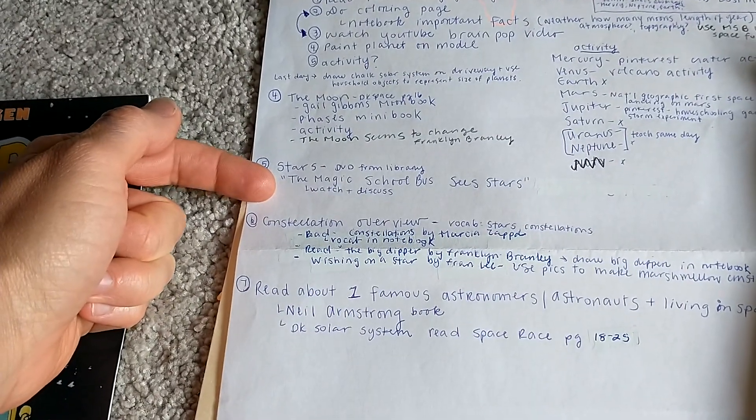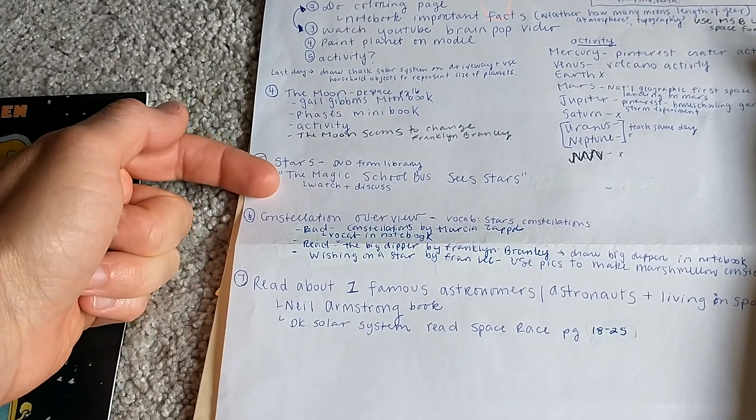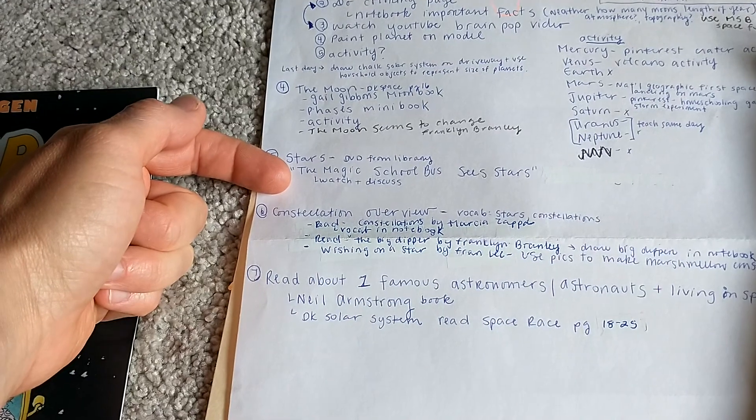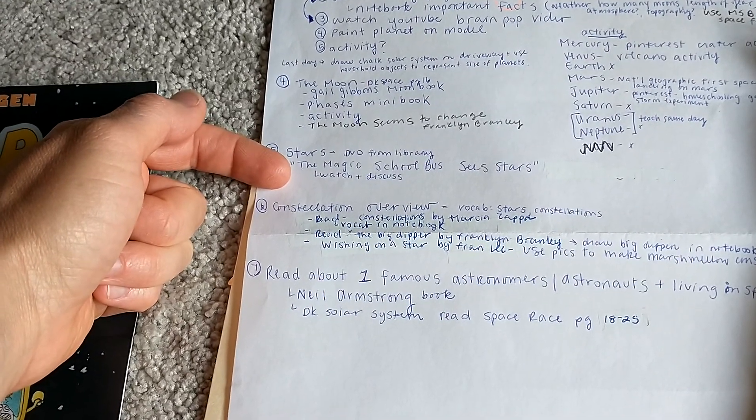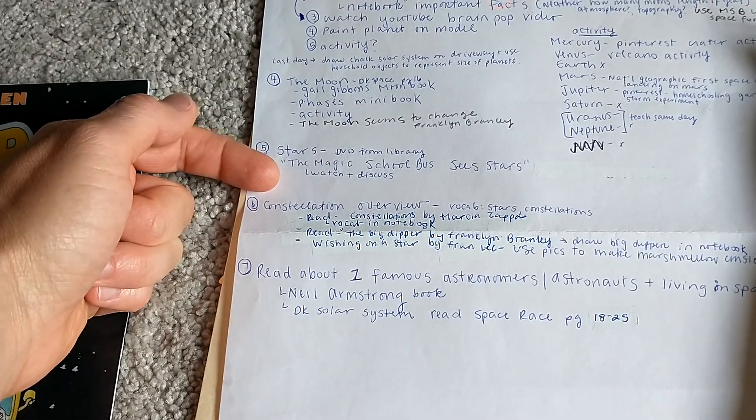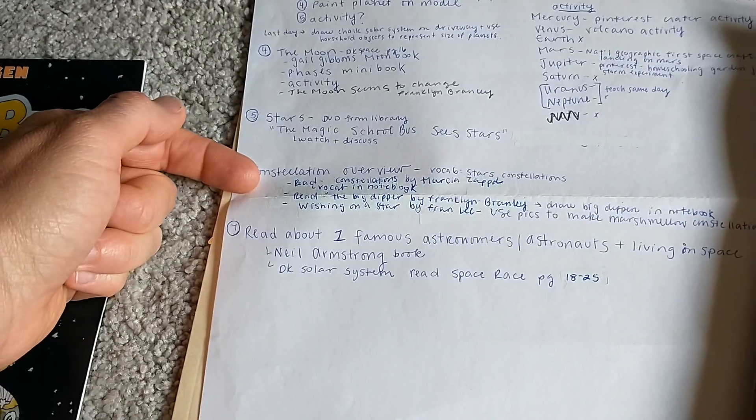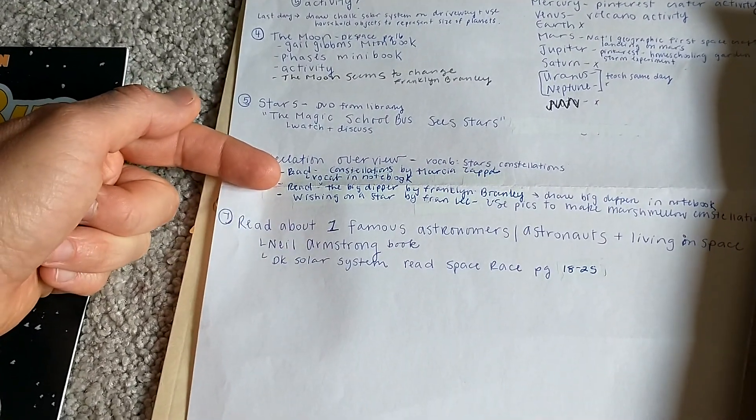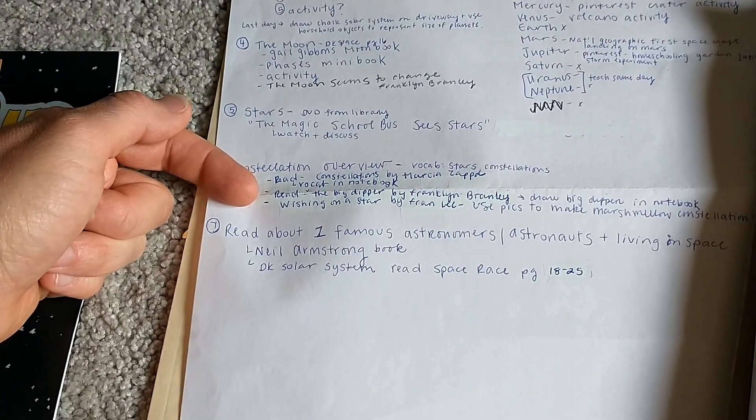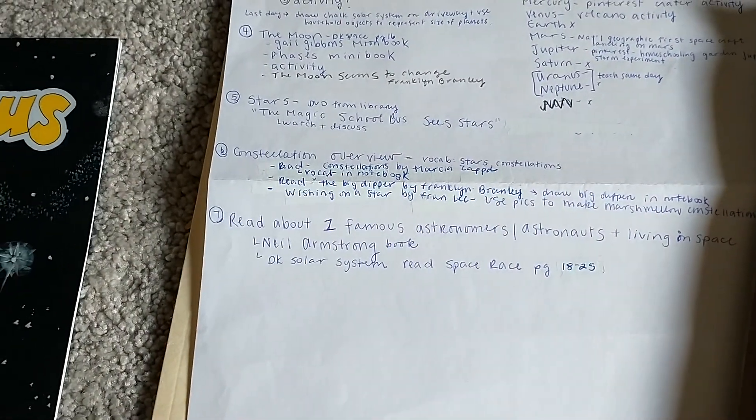Then we'll be studying stars. And there's a star DVD from the library that we're going to watch. We're going to do the Magic School Bus Sees Stars. And we'll discuss that, which then moves us into constellations. Here's my constellation books I want to read. And then we're going to make marshmallow constellations.